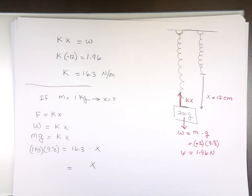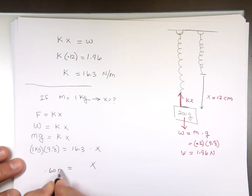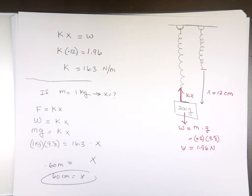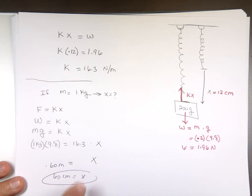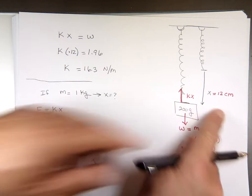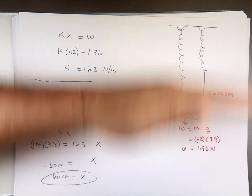So once I'm in the lab and I figure out what K for that spring is, I can predict how far it would stretch if I put one kilogram, two kilograms, three kilograms, half a kilogram. What's X equal to? 0.60 meters, which means 60 centimeters. So if I attached one kilogram, it should stretch 60 centimeters.